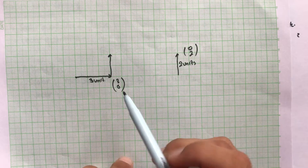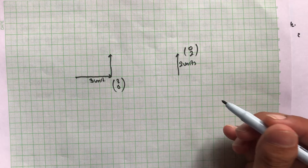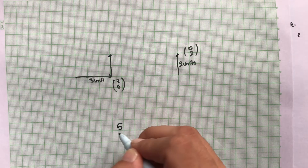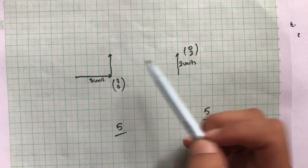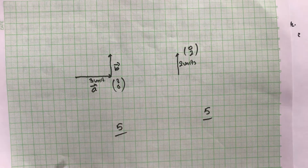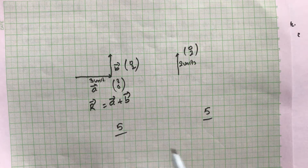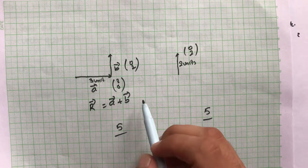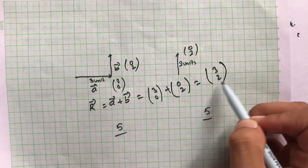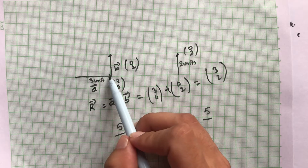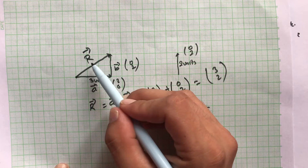You may have doubts about how two vectors at different locations can be the same vector. If I write the scalar quantity five here and five there, they are the same thing. Similarly, if I draw a vector here or move it here, they are the same vector. Let's call them vector A = (3,0) and vector B = (0,2). Adding them gives me (3,2) — a new resultant vector.